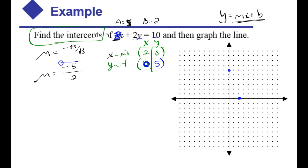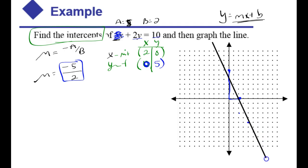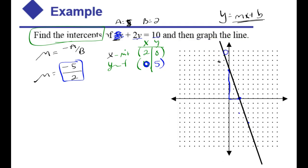And sure enough, the slope checks because I'm going down 5 and running 2. And if you wanted to do that again — down 5, run 2 — you could almost fill up your graph before you drew that line, which is sometimes nice to do. If you have a credit card or a student ID, that might be nice to draw a straight line.